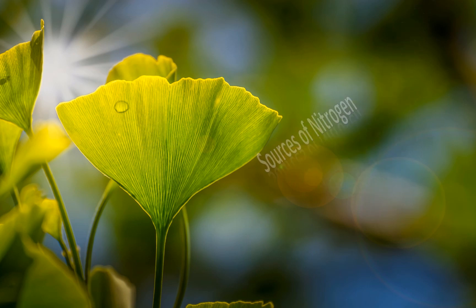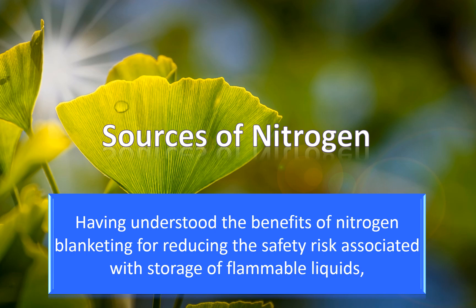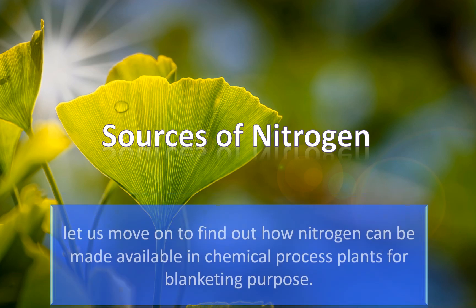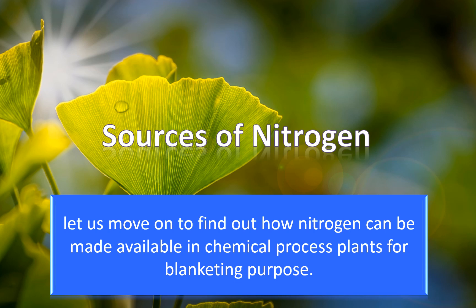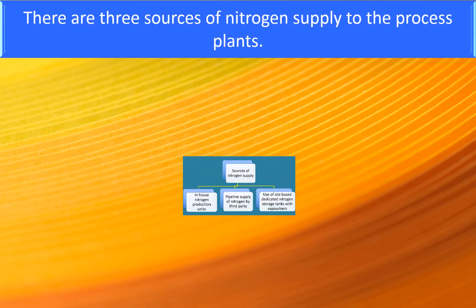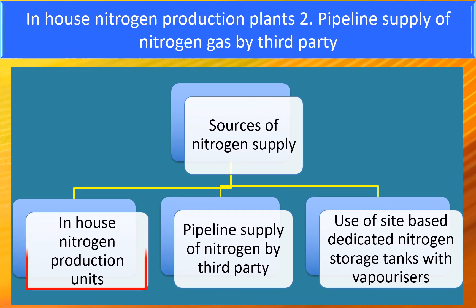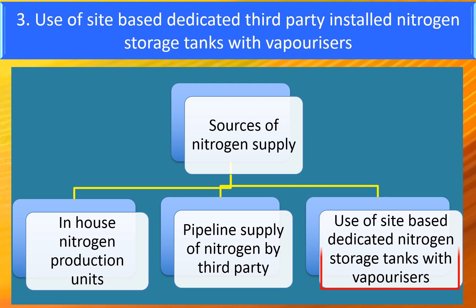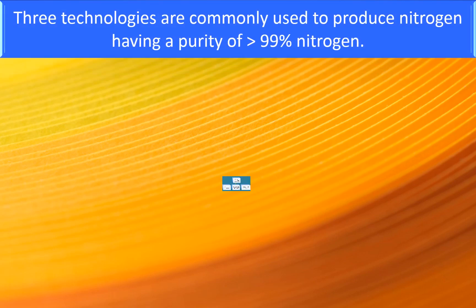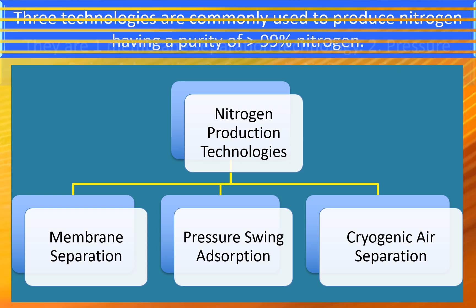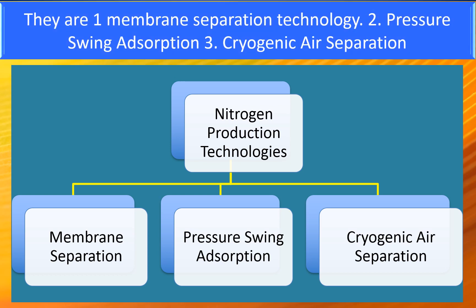Sources of Nitrogen: There are three sources of nitrogen supply to process plants. One, in-house nitrogen production plants. Two, pipeline supply of nitrogen gas by third party. Three, use of site-based dedicated third-party installed nitrogen storage tanks with vaporizers. Three technologies are commonly used to produce nitrogen with purity greater than 99%: membrane separation technology, pressure swing adsorption, and cryogenic air separation.